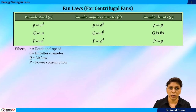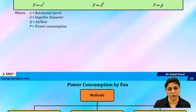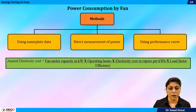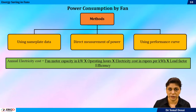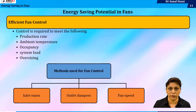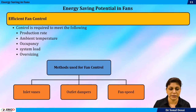We will also learn about the laws governing fans, and how diameter as well as speed decides pressure and power consumption. Then we will see how to measure power consumption — three different methods are available: using data given on the nameplate, directly measuring, or going by the performance curve. All three methods are explained in this series.